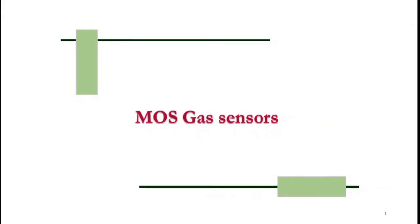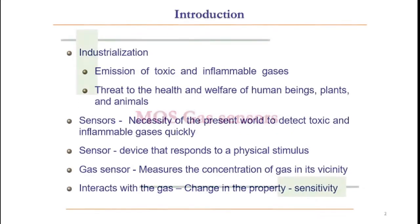We always wish to lead a comfortable and sophisticated life. Most of the products that we use in our day-to-day life are manufactured by industries. Industrialization leads to the emission of several toxic and inflammable gases. They become a threat to the health of human beings, plants, and animals.